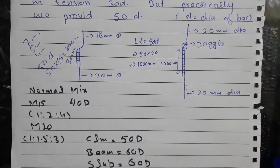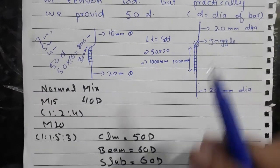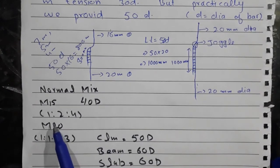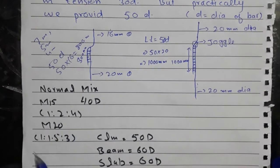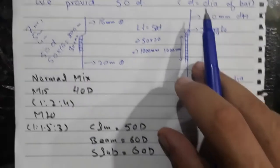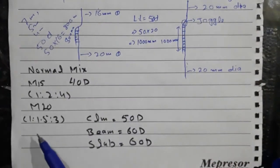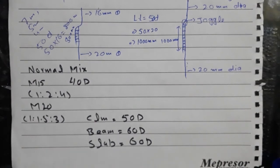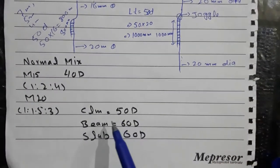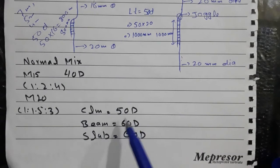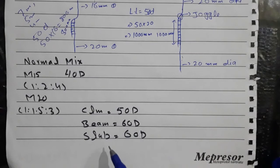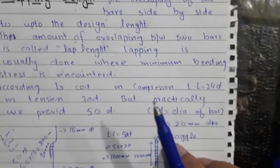We can also determine the lapping length based on the mix of concrete. For M15 grade concrete, which has a mix ratio of 1:2:4, the lap length is 40d. For M20 grade concrete, with a ratio of 1:1.5:3, the column lap length is 50d, the beam lap length is 60d, and the slab lap length is also 60d.